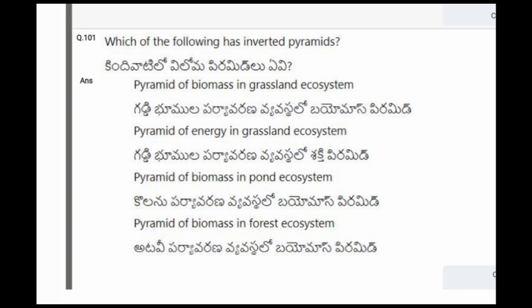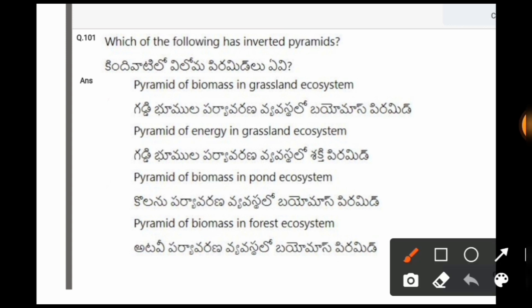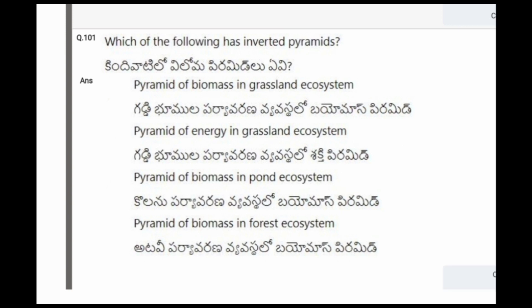Next question: Which of the following has an inverted pyramid? The options are pyramid of biomass in grassland ecosystem, pyramid of energy in grassland ecosystem, pyramid of biomass in pond ecosystem, pyramid of biomass in forest ecosystem. The correct option is the third one, pyramid of biomass in pond ecosystem.